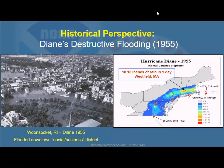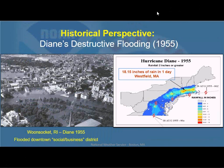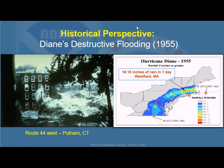From a historical perspective, look at the destructive flooding from Diane in Woonsocket — flooding the downtown social and business district — with widespread flooding that also produced a 24-hour rainfall amount of 18.15 inches in Westfield. That stands today as the state record for the most rainfall in one day in Massachusetts. Notice the track of Diane and where the heavy rain fell: it's west of the track, across the Poconos into the Springfield-Westfield area along the Mass Pike into Boston, with very little if any rainfall to the east — very typical of these systems.